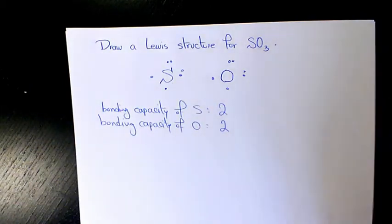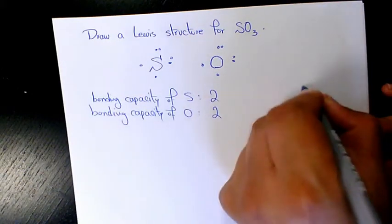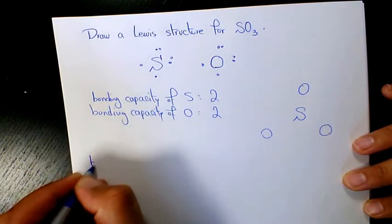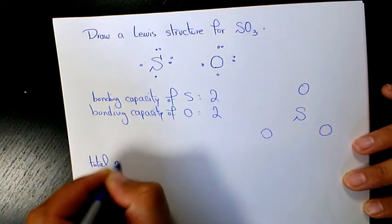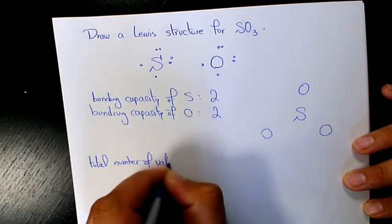and we have three atoms of oxygen, it's better to have sulfur as a central atom like that. Then what I can do, I need to find out the total number of valence electrons